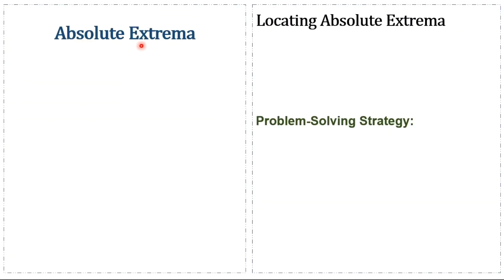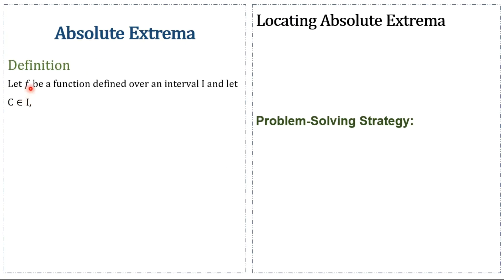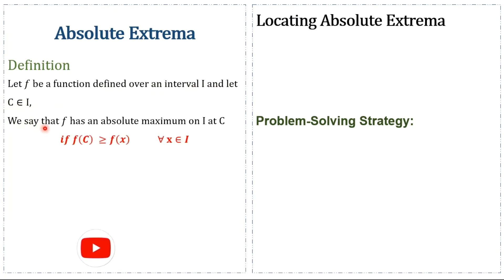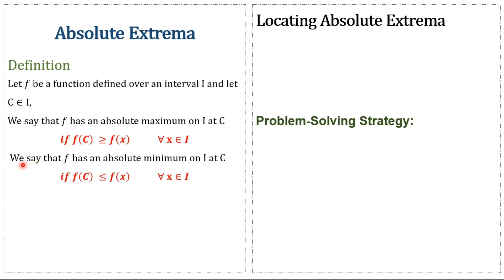Absolute extrema means absolute maximum and absolute minimum. Let f be a function defined over an interval I, and let c belong to I. We say that f has an absolute maximum on interval I at c if the value of the function at c is greater than or equal to the value of the function at x, for all x belonging to I.